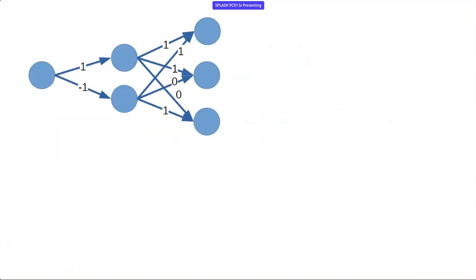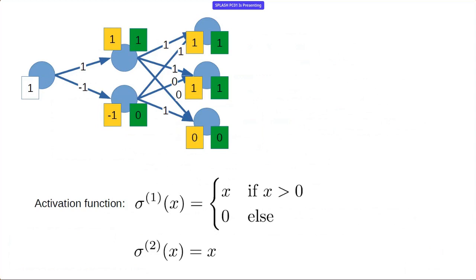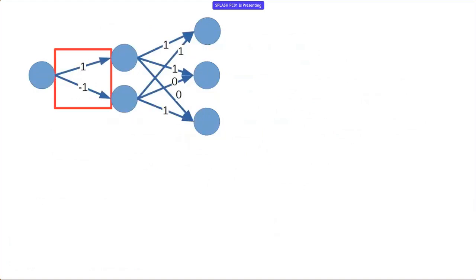Here's an example of a neural network. We want to see what's the input-output behavior. We take our input — in this case, one — put that on the starting node, follow it through multiplying by the edge weights. At each intermediate node we apply an activation function, in this case the ReLU activation function, which just cuts off at zero. For the next layer we use the identity activation function. This particular neural network maps the input one to the output one, one, zero.